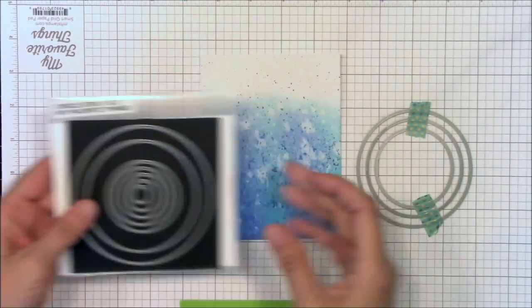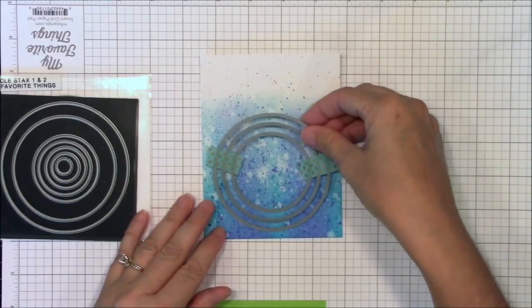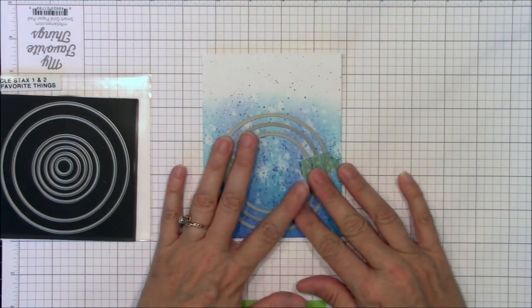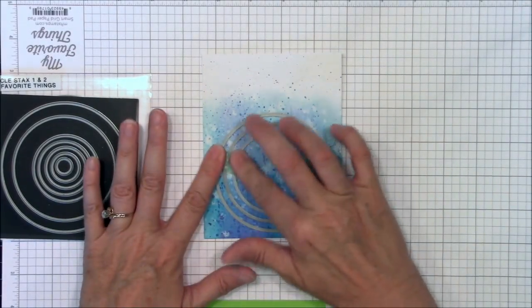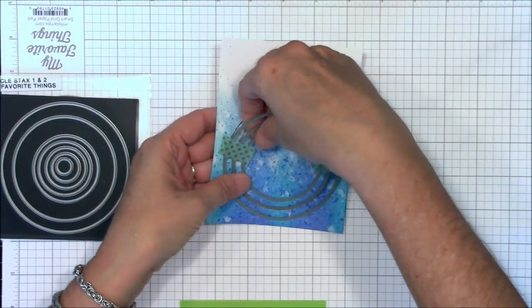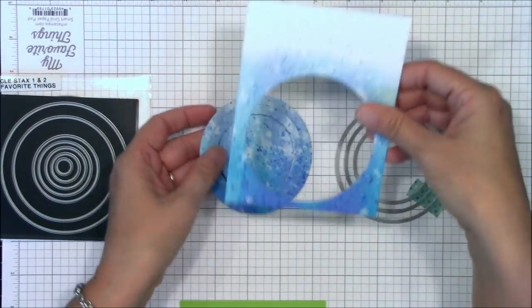Now it's time to create what will become our slider channel and shaker pocket. I used three of my circle stacks dies in consecutive sizes with a quarter inch difference between the three dies. I ran them through my Big Shot and discarded the outside portion of the panel.